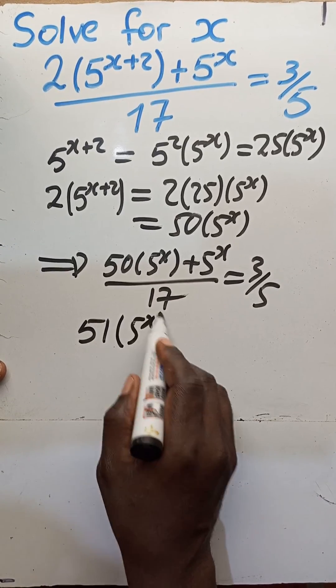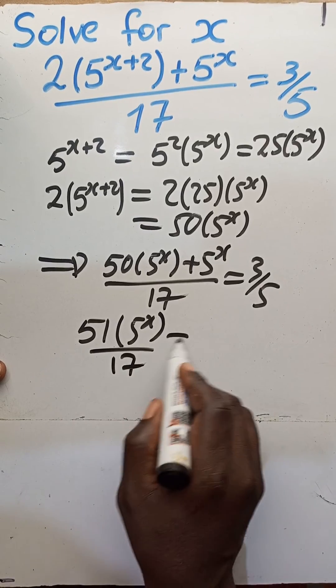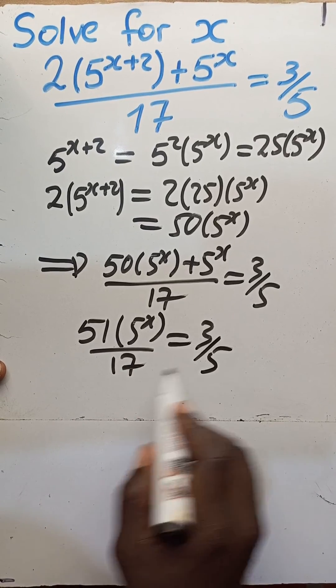We have 51 times 5 to the x all over 17 is equal to 3 over 5.